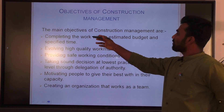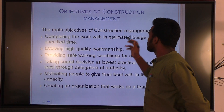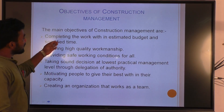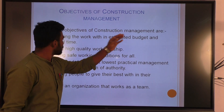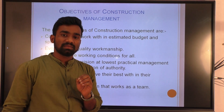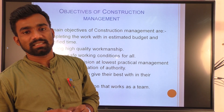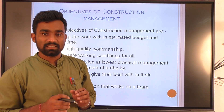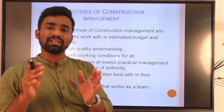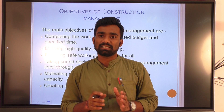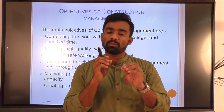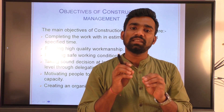Now there are some objectives of construction management. The first objective is completing the work within the estimated budget and specified time. Our first aim is to complete the project with an estimated budget and within a specified time. Suppose you have fixed a six-month time period for a project — you work within that time boundary and money budget boundary.